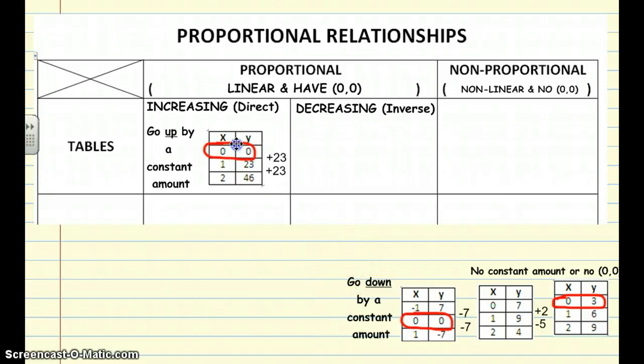So as we look at this table, notice it has the coordinate pair (0,0) because that's one of the things about being proportional. And then notice the Y column changes by adding 23 each point. So that's what makes it linear.